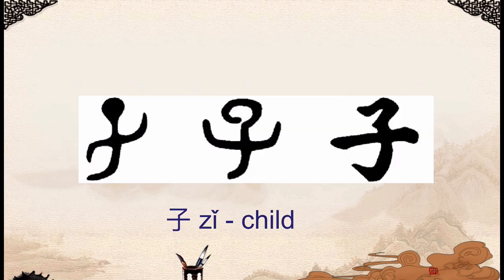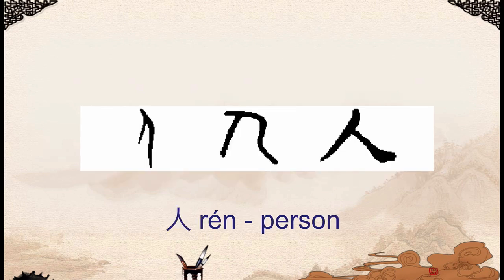We've also got 子, which means child in classical Chinese and is used in a lot of Chinese words. It was originally a picture of a baby or a person. You can see the modern version in the title at the bottom. We also have 人, which means person, and originally this was a picture of a man standing up. It's become slightly stylized and doesn't really look like that now.